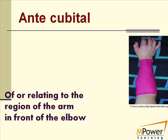Antecubital refers to the portion of the arm before the elbow. Example: I sprained the antecubital region of my hand.